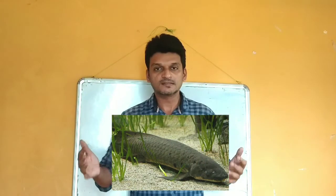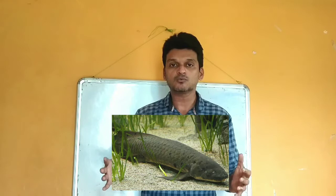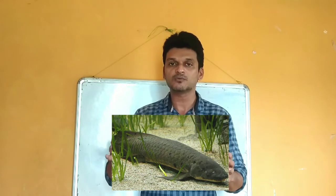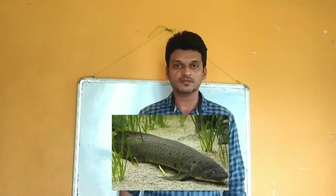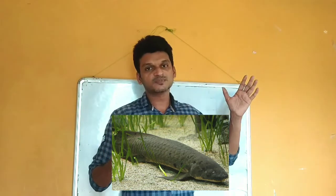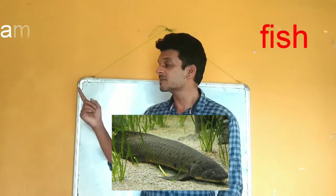Our second connecting link is the lungfish. This lungfish is a fish, and there are six different species found in South America, Africa, and Australia. It falls under the category of fish, but at the same time it has the presence of lungs.